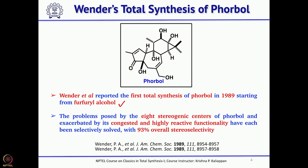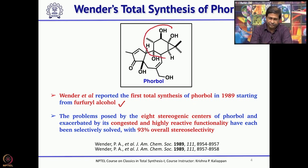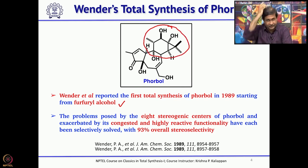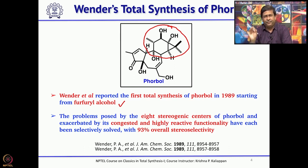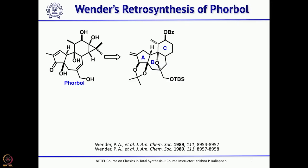There are 8 stereogenic centers in the molecule, and 6 of them are contiguous — you can see the whole ring has stereocenters. He used a very interesting reaction called the oxido-pyrilium–alkene cycloaddition reaction. Looking at the retrosynthesis, he thought phorbol could be made from a tetracyclic compound by a few functional group transformations.